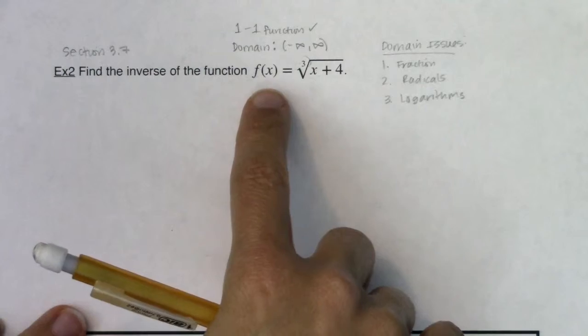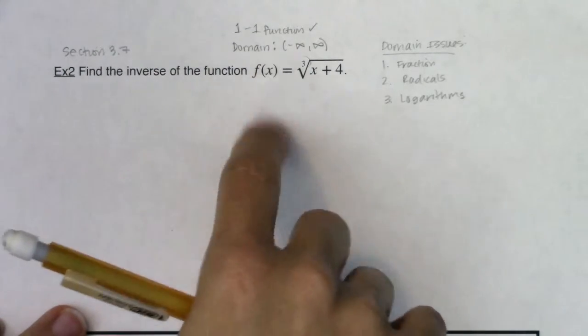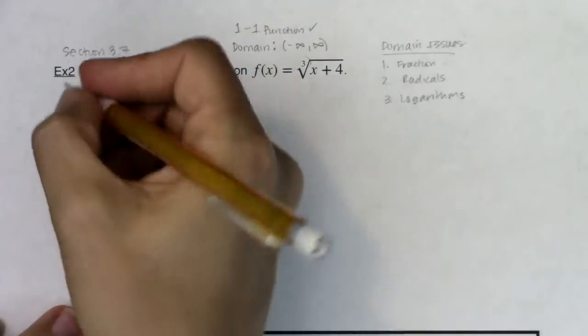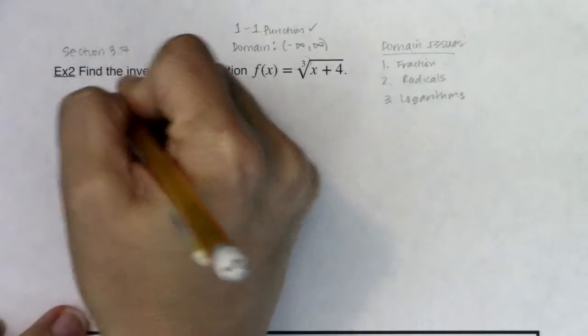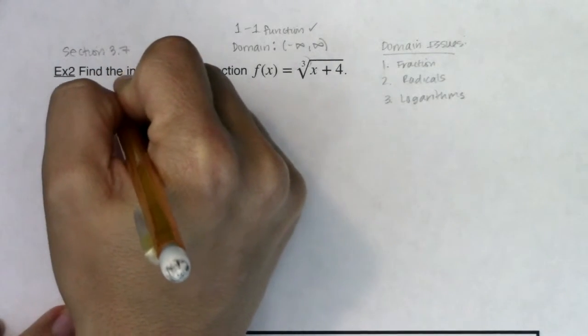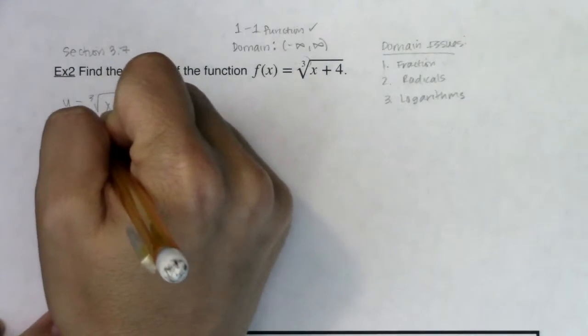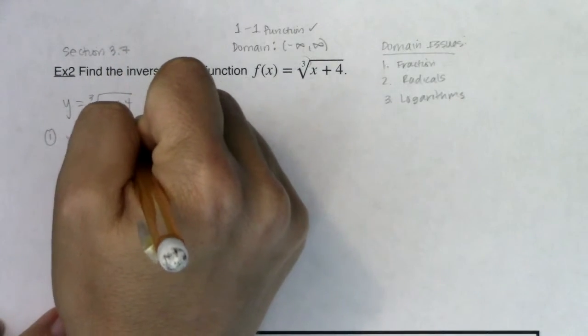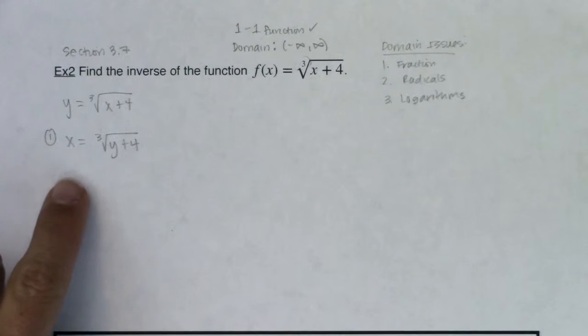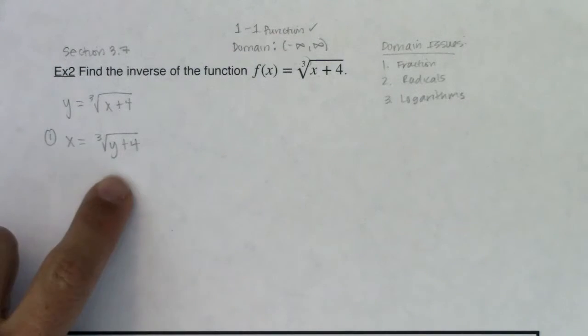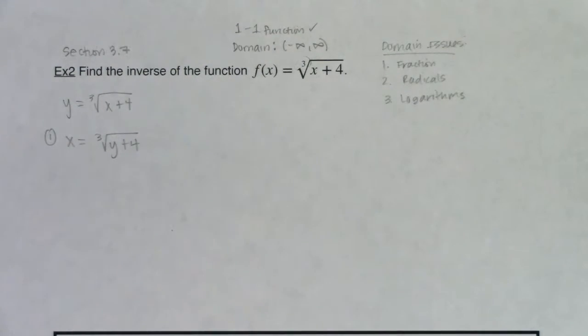You might be saying, well, I don't see any y's just yet. We have function notation, and y and f of x are the same thing. So if this is my original function, the first thing I want to do is interchange x and y. You'll see that where I saw a y, I wrote an x, and where I saw an x, I wrote a y.